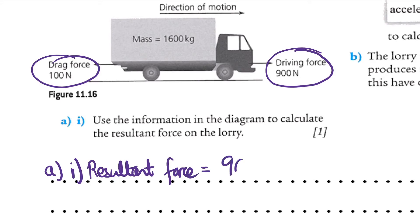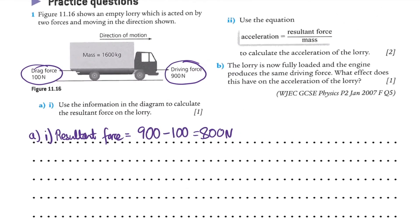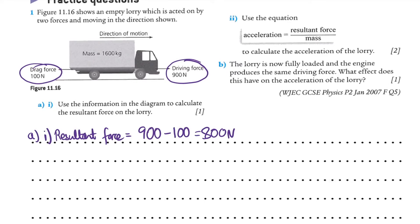So my resultant force equals 900 take away 100, giving us 800 newtons. It doesn't ask the direction but I'm going to write it in anyway: to the right, or in other words in the direction that it's traveling. In which case that lorry is going to accelerate.